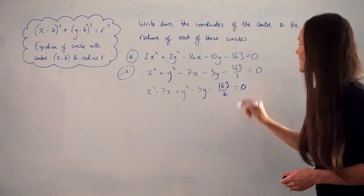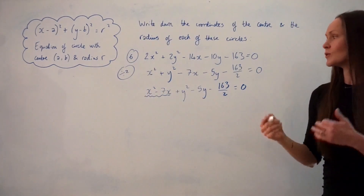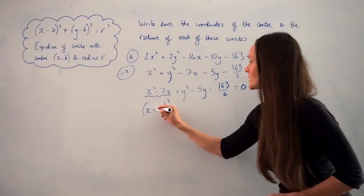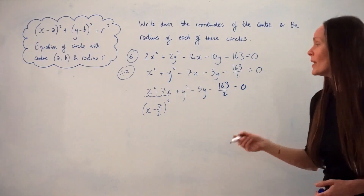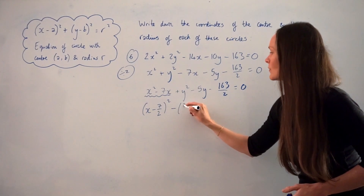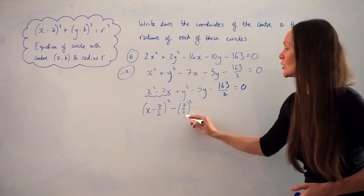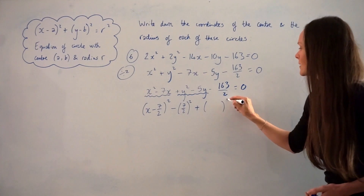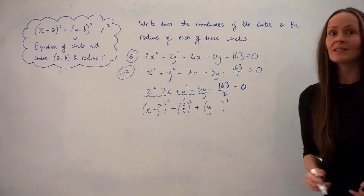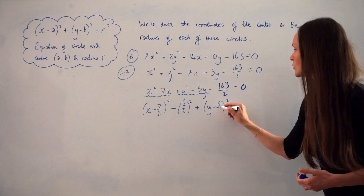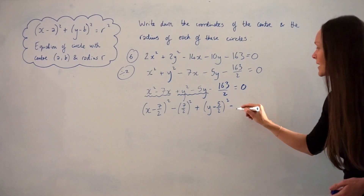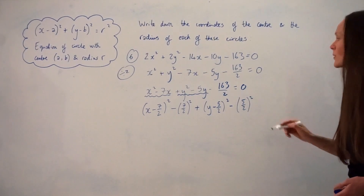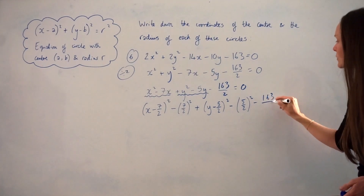Now I'll complete the square. For the x terms, I take the coefficient of x, which is negative 7, divide by 2 to get negative 7 over 2, giving (x − 7/2) squared, and I subtract (7/2) squared, which is 49 over 4. For the y terms, the coefficient is negative 5, divided by 2 gives negative 5 over 2, giving (y − 5/2) squared, and I subtract (5/2) squared, which is 25 over 4. I also carry down minus 163 over 2.